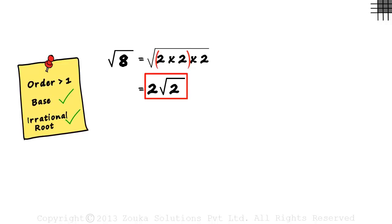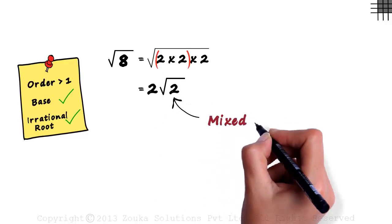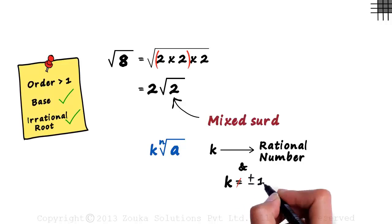Now look at this two root two. A rational number is multiplied with an irrational number, but the result is still irrational. This is called a mixed surd. It's of the form k nth root of a, where k is a rational number and k does not equal plus or minus one.